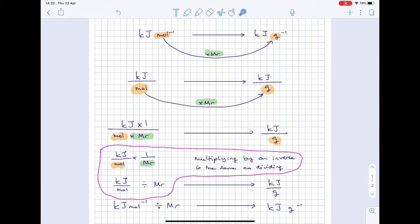By MR. So just multiplying the moles by MR underneath the kilojoules is the same as writing kilojoules times 1, because times 1 doesn't change this kilojoule, divided by moles times MR.